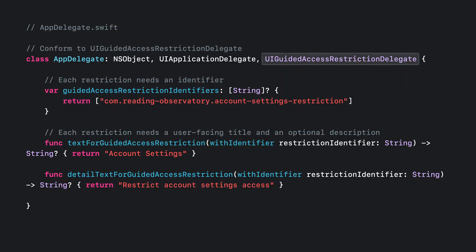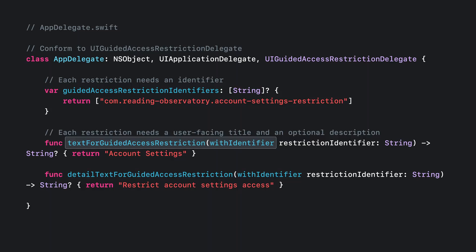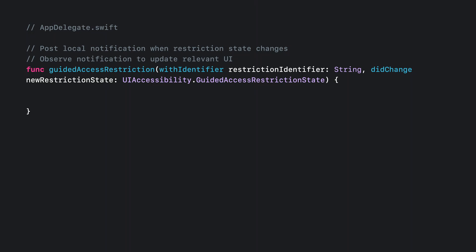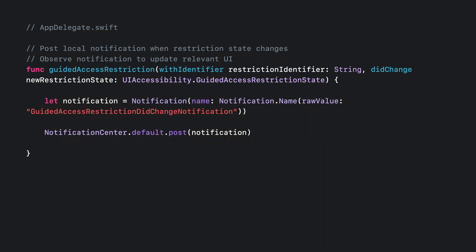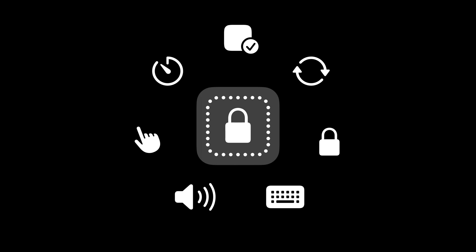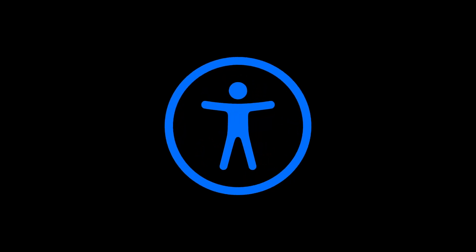To do this, first conform your app delegate to the UIGuidedAccessRestrictionDelegate protocol. You need to let guided access know about each restriction by providing an array of identifiers — I've got just one. You're also required to give a user-facing title for each, as well as an optional description if you need to provide additional detail. These strings will show up in the options menu. Finally, implement the guided access restriction with identifier did change method to receive a callback when a restriction is toggled. This is where your app could post a notification to perform logic to accommodate the restriction, like turning off user interaction for certain buttons. Check if a custom restriction is enabled at any time by calling guidedAccessRestrictionState(forIdentifier:) on UIAccessibility. All of the system-provided and custom app-based restrictions make guided access extremely configurable, which is why it is a fantastic accessibility feature.